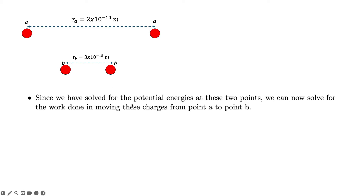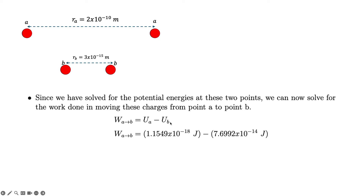We have now solved for the potential energies at points A and B. Substituting the values into W_AB = U_A − U_B, we get the work done equal to −7.6991×10⁻¹⁴ joules.